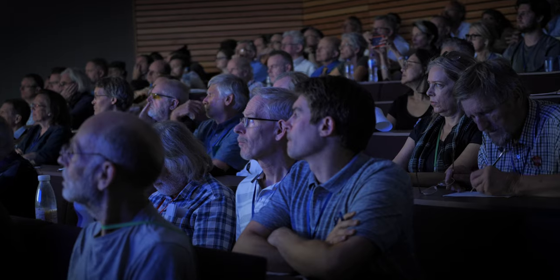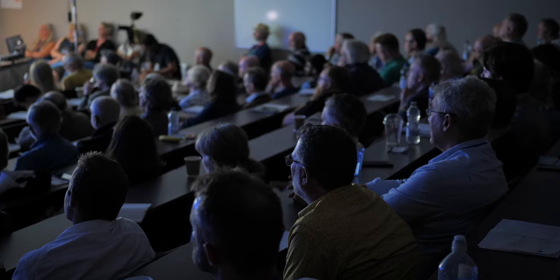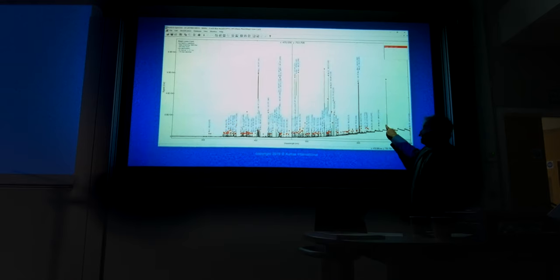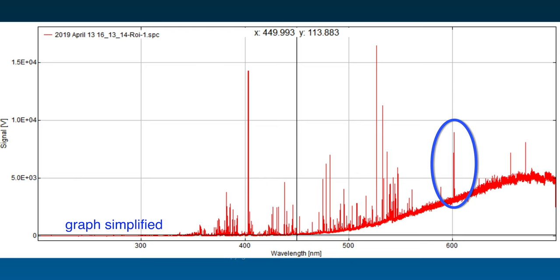When you light up the chamber at low discharge with a simple atmosphere, you might see that line and maybe one more here, because it's a very simple discharge. It's easy to know what's in there.